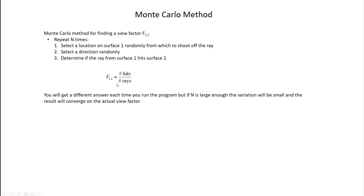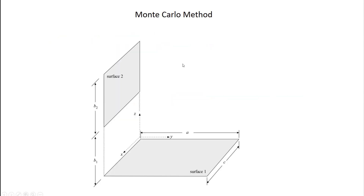Let's do this for a geometry simple enough that we can check our answer against a deterministic answer. The geometry consists of two rectangular planes: surface 1 sits in the xy-plane with dimensions a by c, and surface 2 sits in the xz-plane, offset by a distance b1, with dimensions c by b2. We want to find F12 and will go through the steps we talked about.